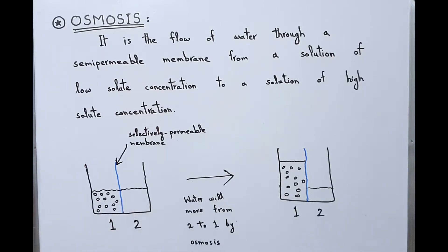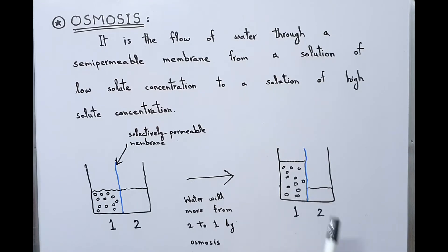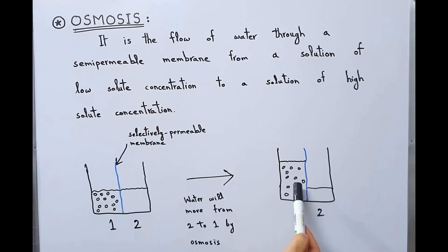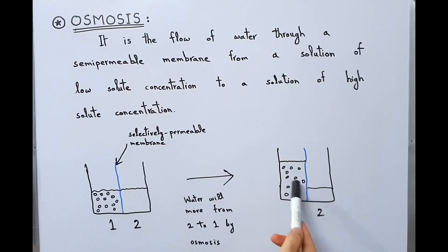Solution 2 is purely water, while solution 1 contains some solute molecules that cannot cross the semi-permeable membrane. If we allow these solutions to stand for some time, after some time we will see that water has moved from solution 2 to solution 1. This is because the solute particles in solution 1 are causing an osmotic pressure, which attracts water from solution 2 towards solution 1.